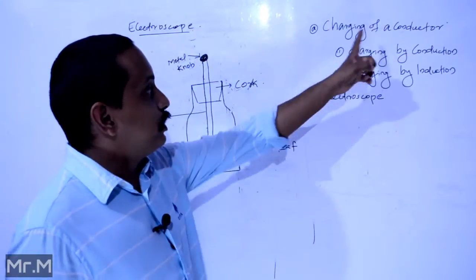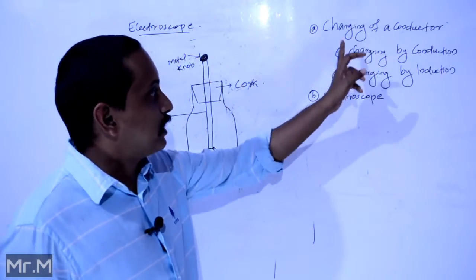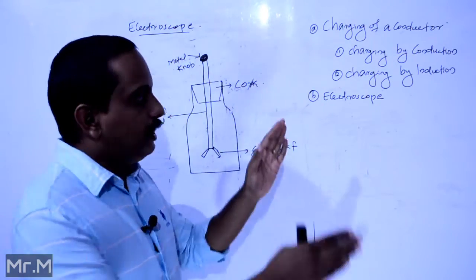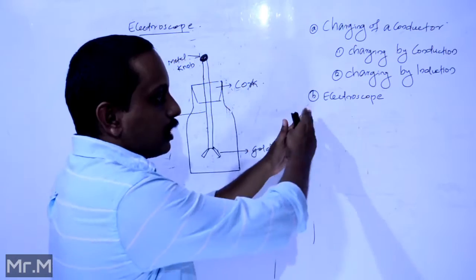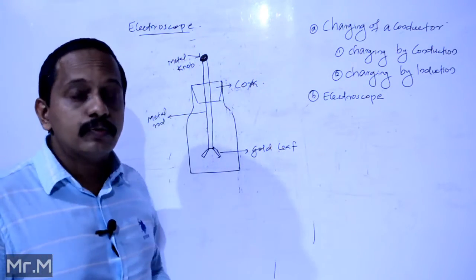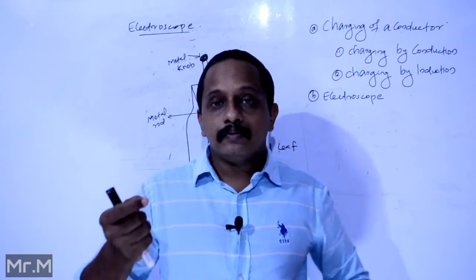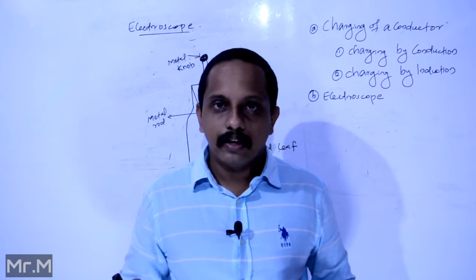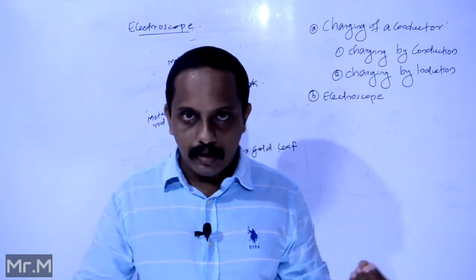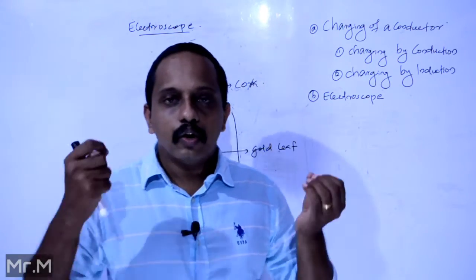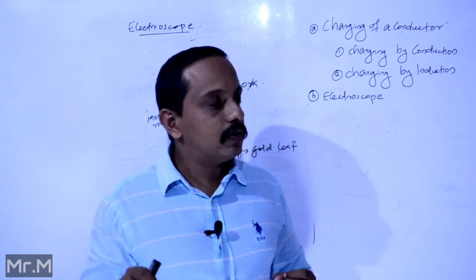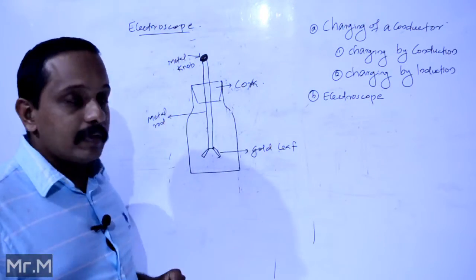So we have charging of a conductor, which means charging by conduction and charging by induction. The last topic is the electroscope. An electroscope is a device which is used to find whether an object is charged or not.